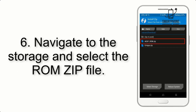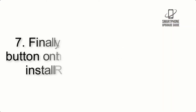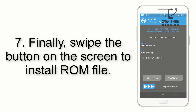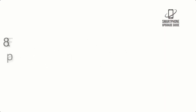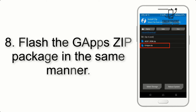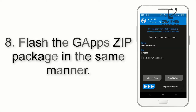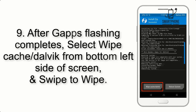Step 5: Go back to the recovery main screen and tap on the Install button. Step 6: Navigate to the storage and select the ROM zip file. Step 7: Swipe the button on the screen to install the ROM file.